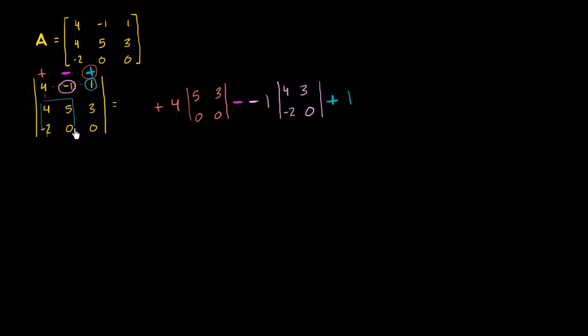So its submatrix is this right over here. Get rid of the row, get rid of the column: 4, 5, negative 2, 0. 4, 5, negative 2, and 0. So now we just have to evaluate these 2 by 2 determinants.